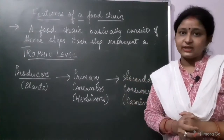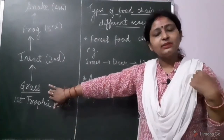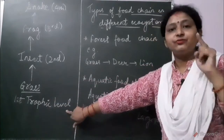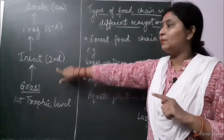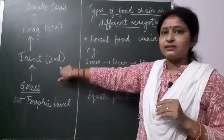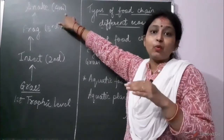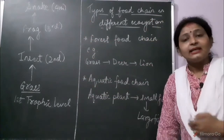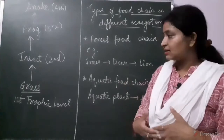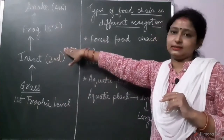Let us understand trophic levels with the help of an example. Here is grass — every food chain starts with grass, which is the producer, so it is at the first trophic level. The grass is eaten up by an insect, so insect is at the second trophic level. Then a frog will eat the insect, so frog is at the third trophic level. A snake will eat the frog, so snake is at the fourth trophic level. From this you can see that the flow of energy is only in one direction — unidirectional flow of energy in the form of food, transferred from one level to the other.